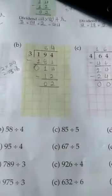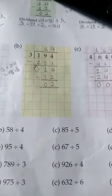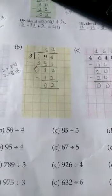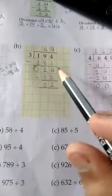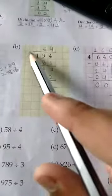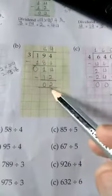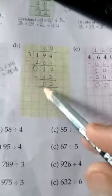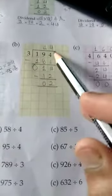14 divided by 3: 3 times 4 is 12, and 3 times 5 is 15. 15 is greater than 14, so write 12 here with quotient 4. 14 minus 12: 4 minus 2 is 2, and 1 minus 1 is 0. So the quotient is 64 and remainder is 2.